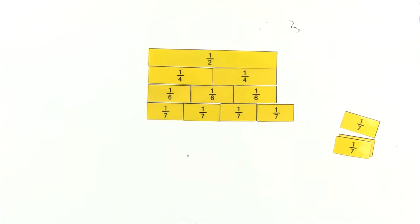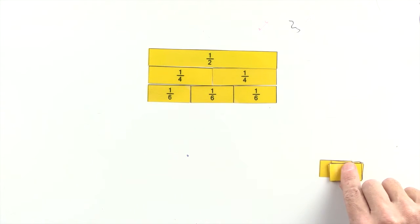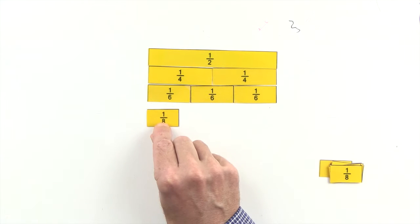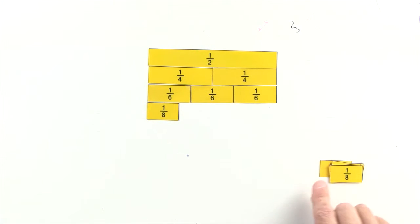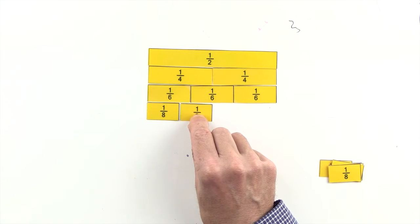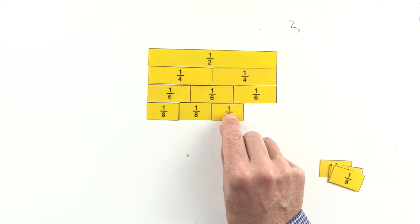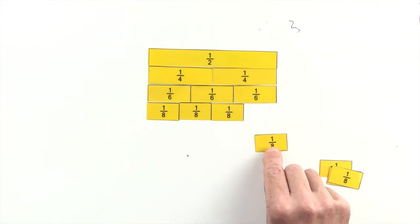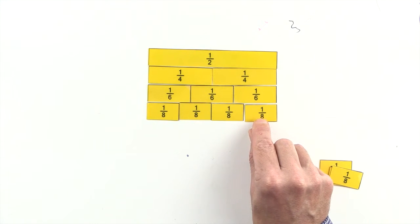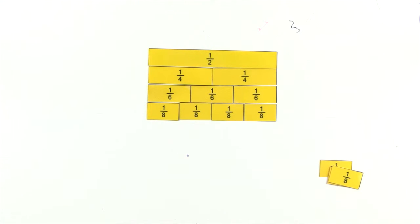But four eighths are equal to one half. So four eighths and one half are equivalent fractions.